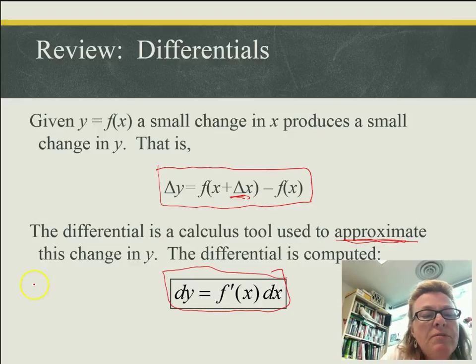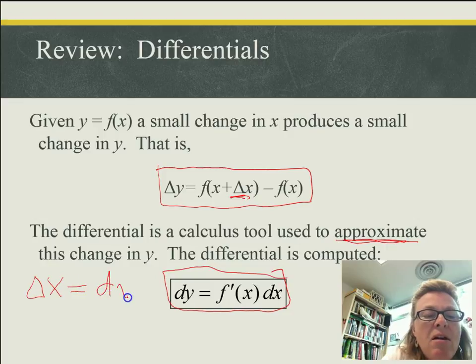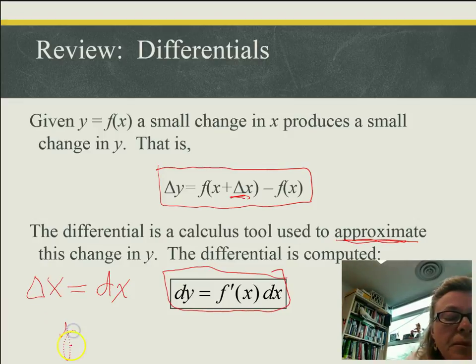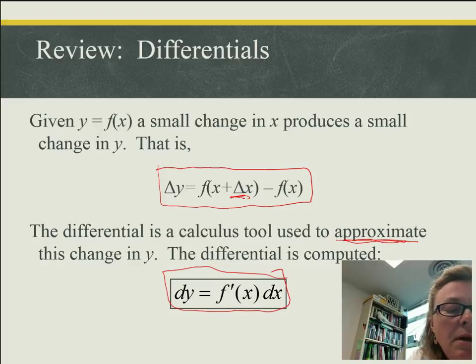So when we're working with differentials, we often say that delta x and dx, because x is the independent variable, those are going to be the same value. But where x is the independent variable and y is the dependent variable, if I make a small change in x, then my change in y will depend on that. And what will happen is, y being the dependent variable, then the change in y will be approximated by dy.